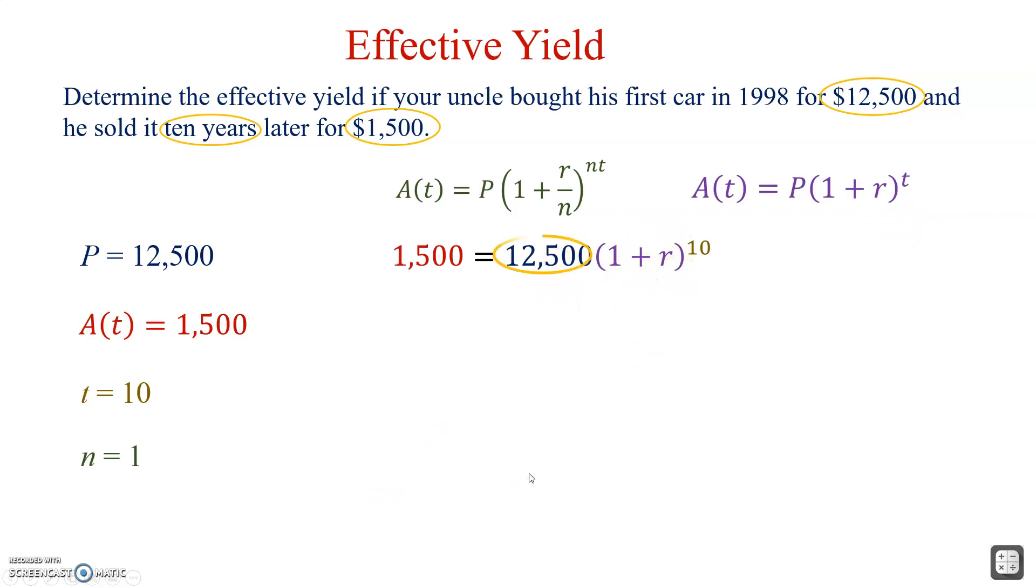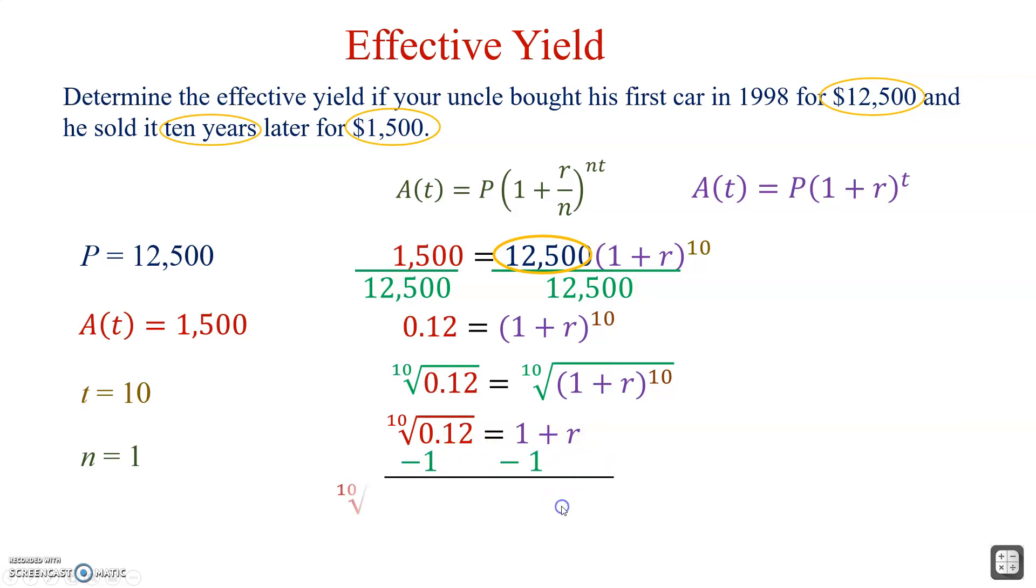We'll first divide both sides by $12,500. When we divide these two numbers, we get 0.12. Now it's time to take the tenth root on both sides. The tenth root on both sides. These ten and this ten are inverse operations. They'll cancel. Tenth root of 0.12. 1 plus R. Subtract 1 on both sides. And this is what goes into the calculator.